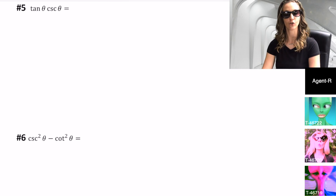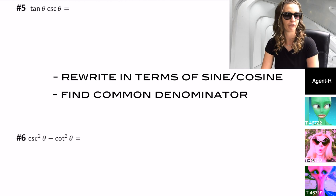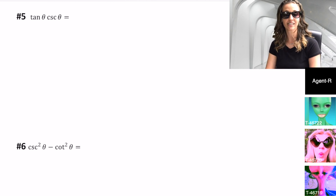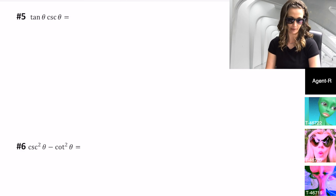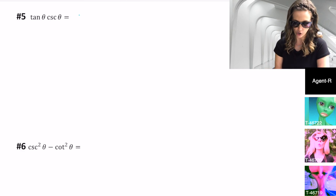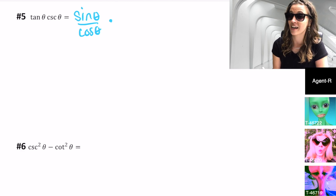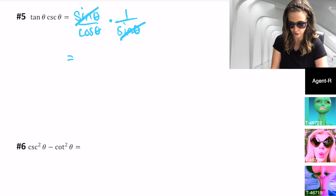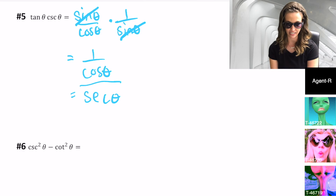Number five: tanθ · cscθ. Our strategies so far: rewrite in terms of sine and cosine; find a common denominator for fractions with addition or subtraction; and factor out something in common if needed. Looking at tanθ · cscθ — I don't see addition or subtraction for a common denominator, nothing obvious to factor. So I'll convert everything to sine and cosine. tanθ = sinθ/cosθ; cscθ = 1/sinθ. Multiplying: (sinθ/cosθ) × (1/sinθ) — the sinθ's divide out, giving 1/cosθ, which is secθ. So secθ was disguised as tanθ · cscθ.